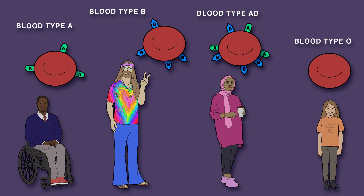If you're blood type A, then you have antibody B. If you are blood type B, you have antibody A. If you are blood type AB, you have neither antibody. Finally, if you are blood type O, you have both antibody A and antibody B.